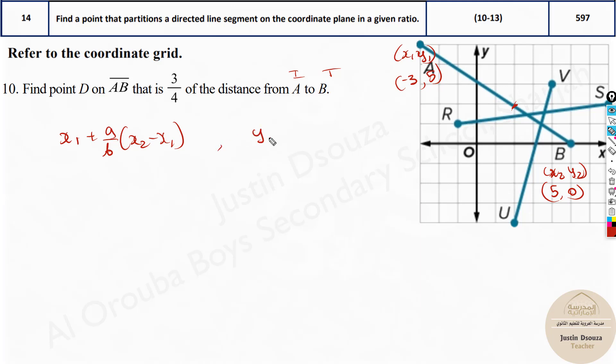What about the Y coordinate? Same thing but it will be Y1 plus A/B times (Y2 minus Y1). The ratio is given, that is A/B. Now let's substitute.